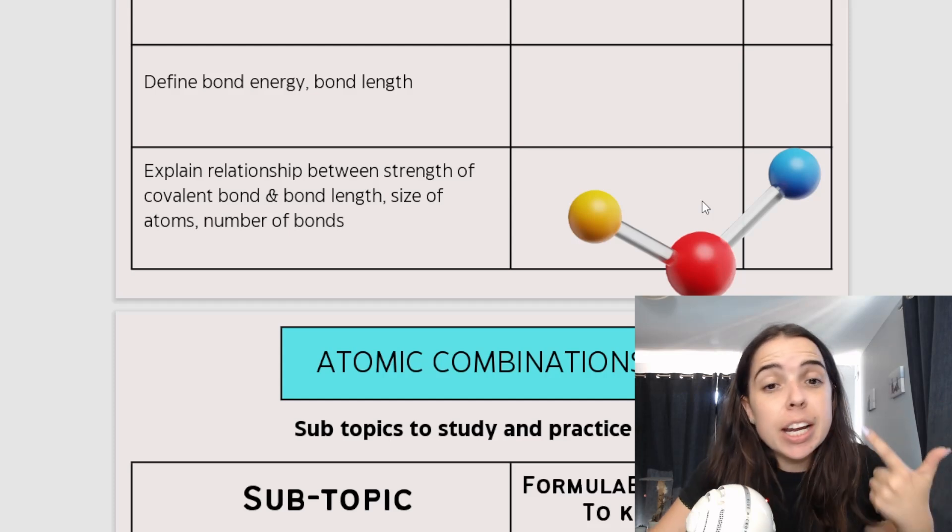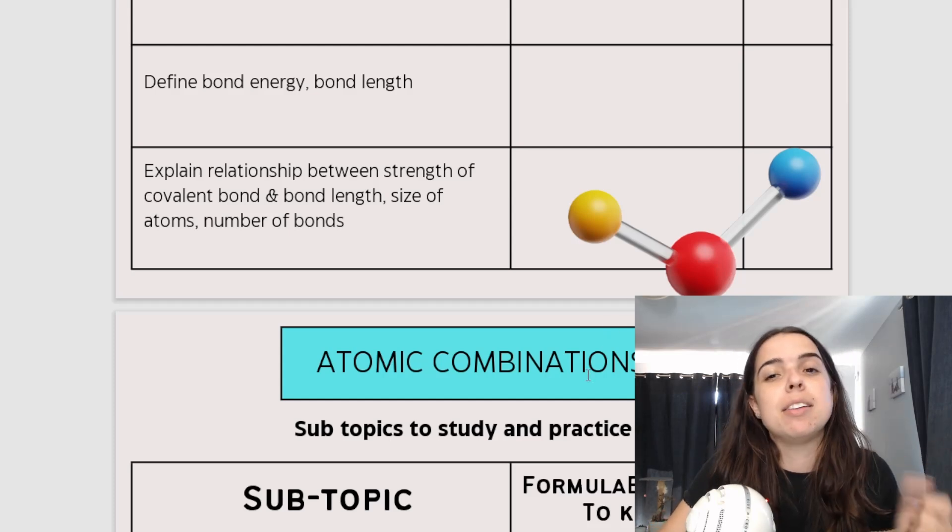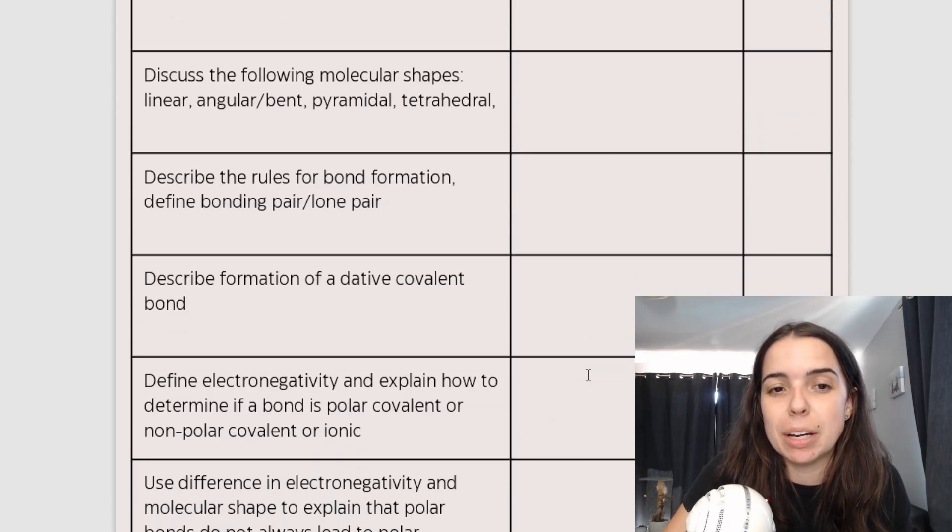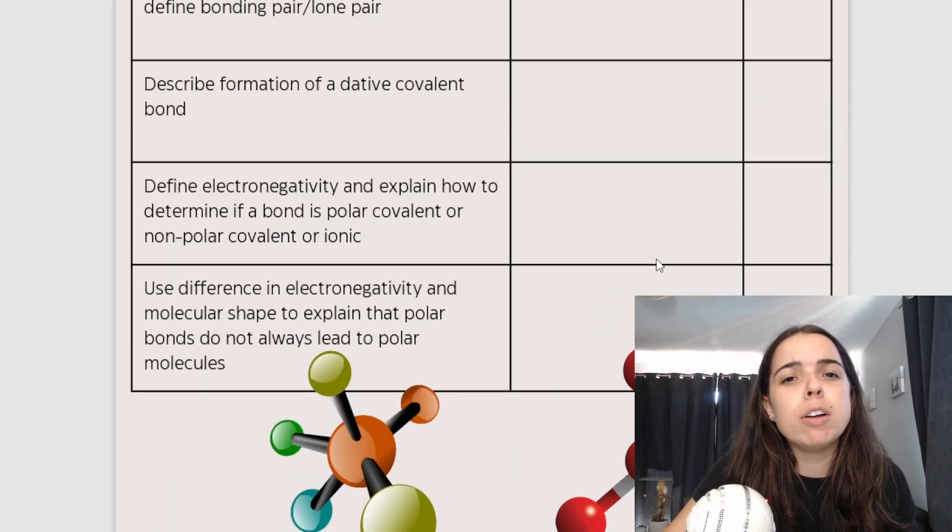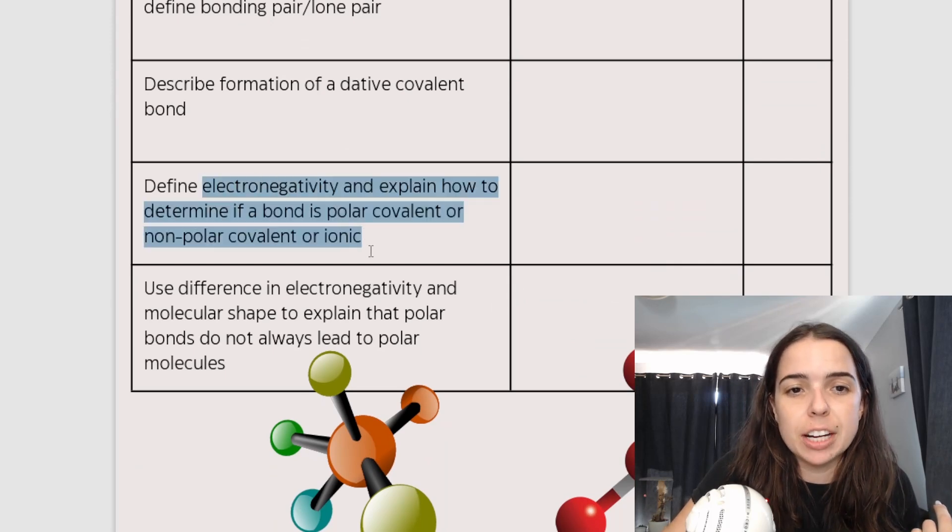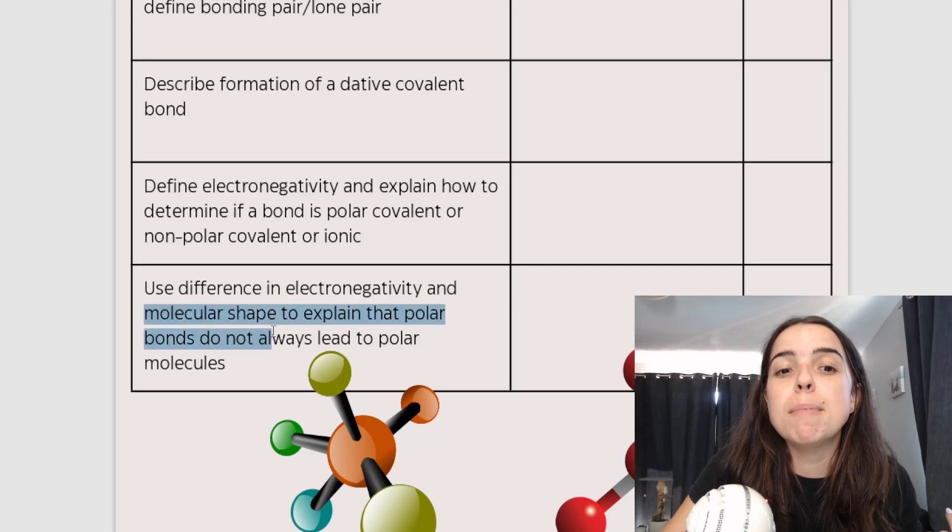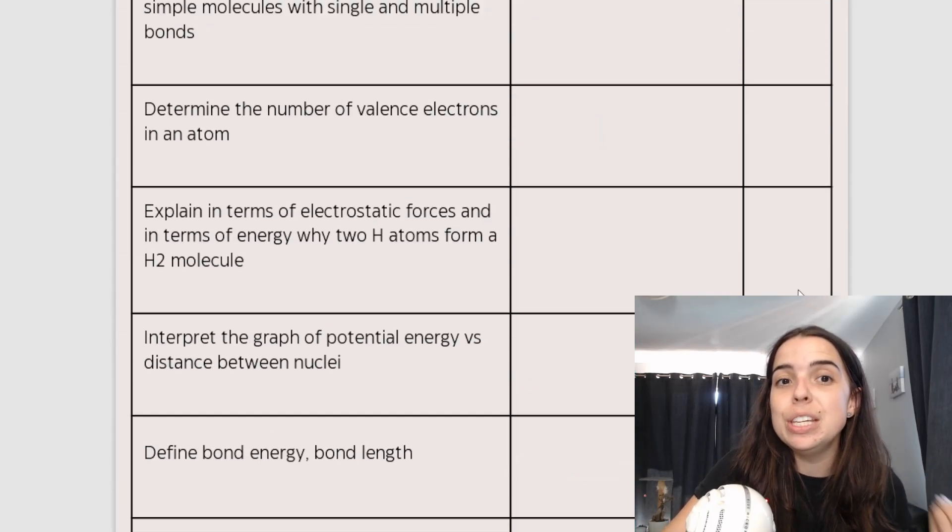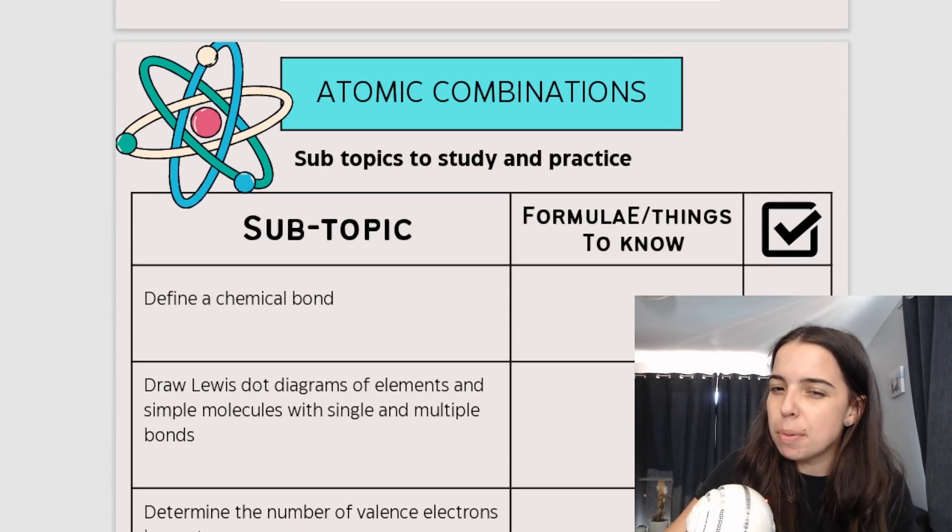And the electronegativity calculations for each bond. This is what you're going to be learning in this topic. Dative covalent bonds, and here we go. We speak about electronegativity and using that difference to tell me the molecular shape. It's a very interesting topic, but there is quite a lot of theory involved and quite a bit of understanding.